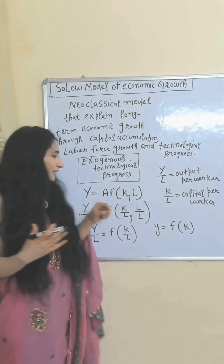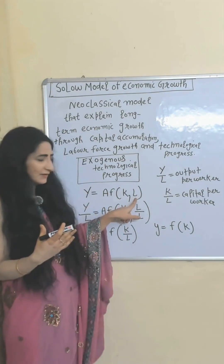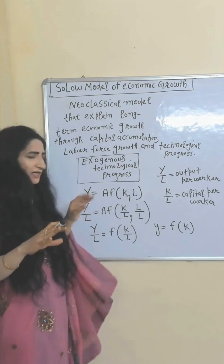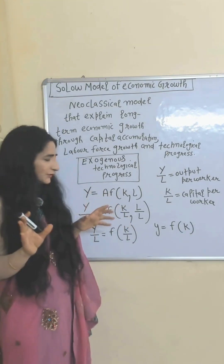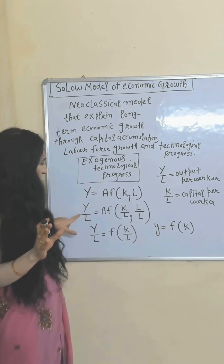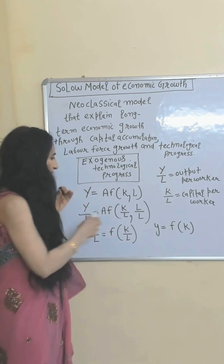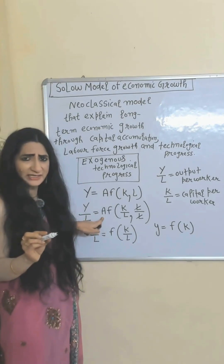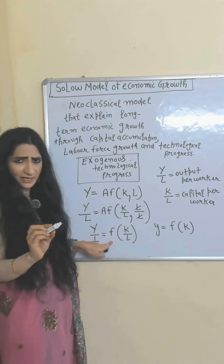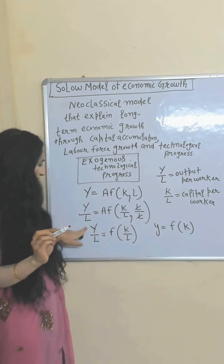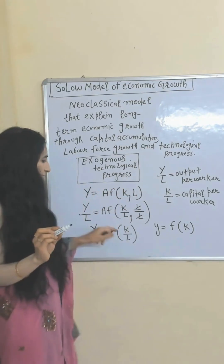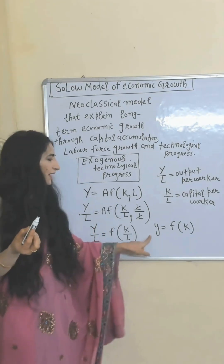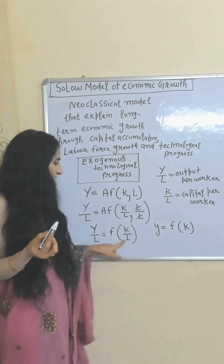Output Y equals f(K, L, A) — capital K, labor L, technology A, which we assume constant. Now we divide both sides of the equation by L to get labor productivity. It becomes Y over L equals f(K over L), with L over L canceling out. Since technology is constant, we can omit it. So Y over L is output per worker and K over L is capital per worker.